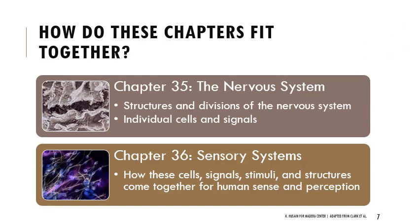There are a couple chapters we're covering today. Chapter 35 is about the nervous system - structures and divisions. The exact function varies depending on what we're talking about, and there are different regions we separate out anatomically and functionally. We'll think about individual cells and types of signals, and then apply that in chapter 36 about sensory systems - thinking about how all these cells, signals, and structures come together to translate into human sense and perception.